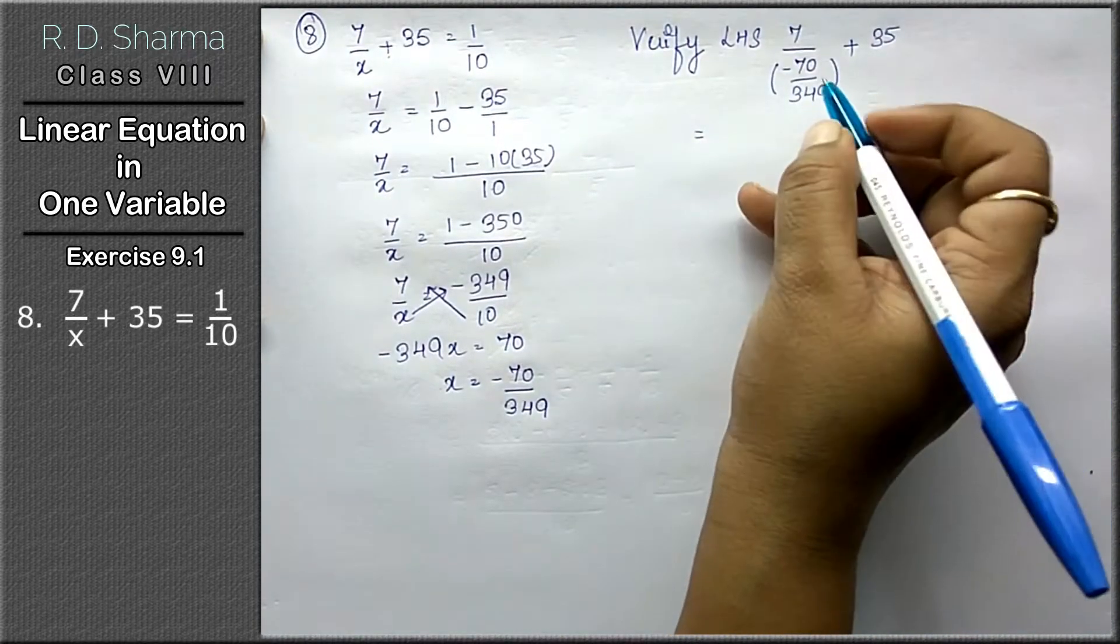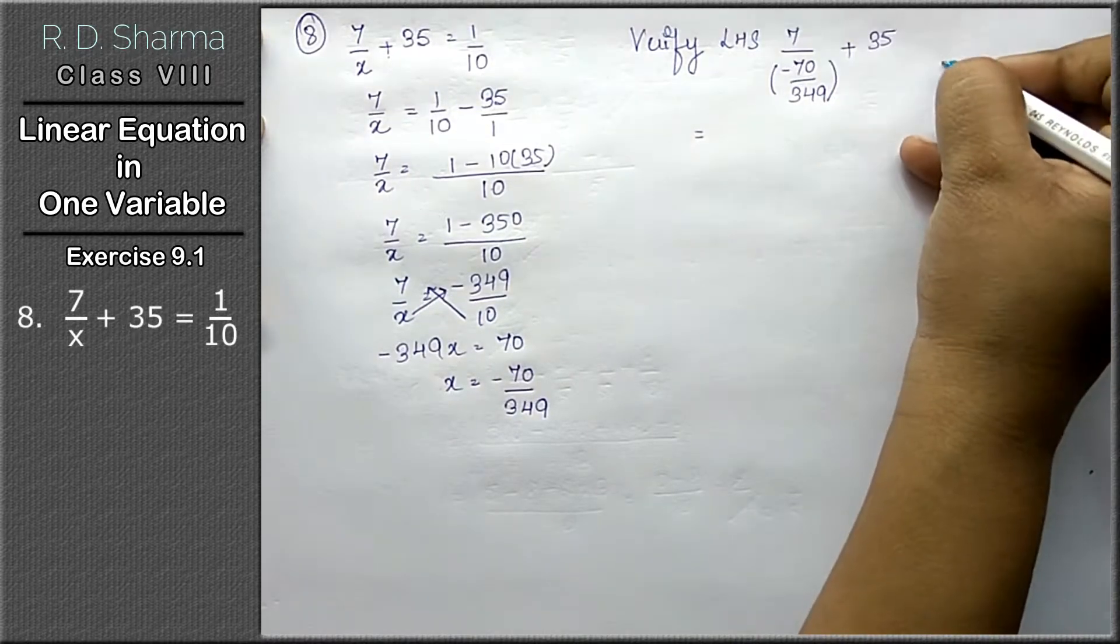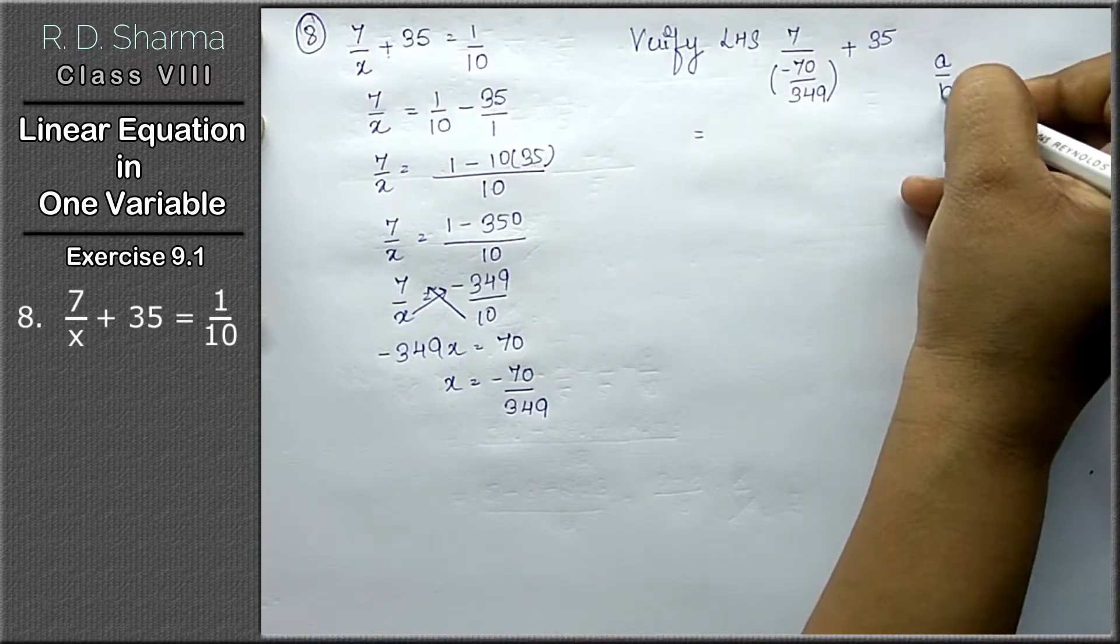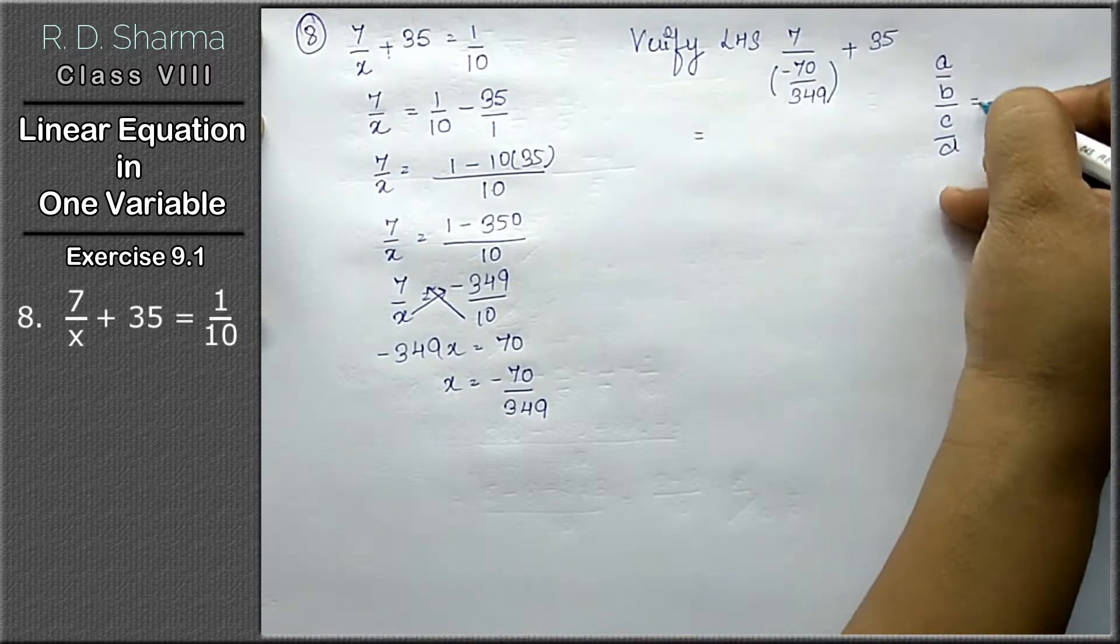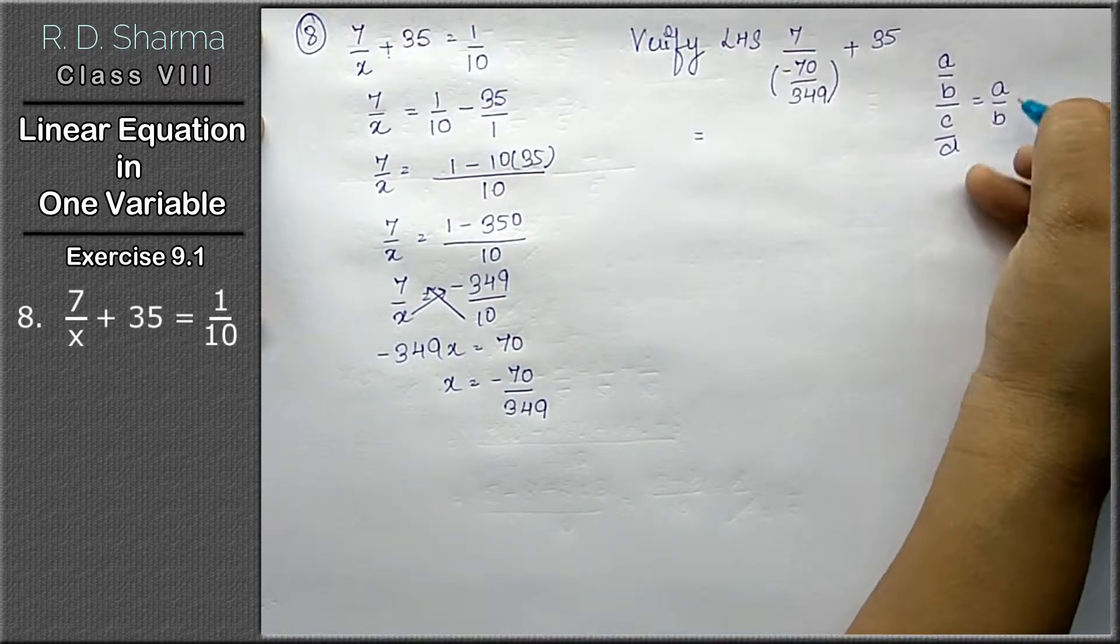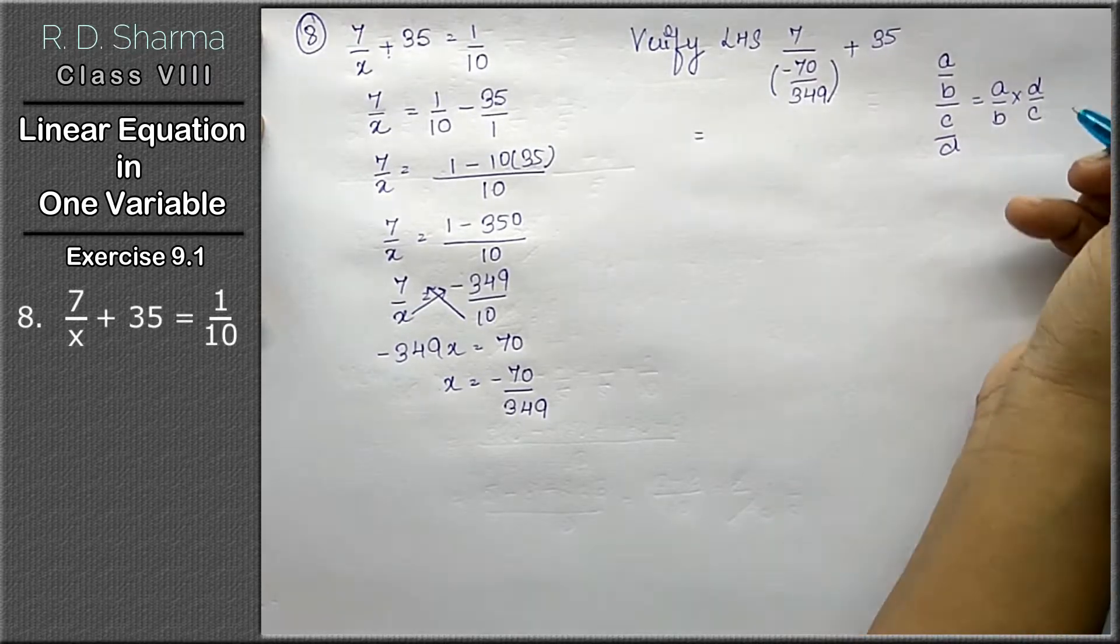Friends, agar is form mein hota hai, iska matlab hota hai, agar a upon b upon c upon d dete hain, to isko hum aise likhte hain: a upon b multiplied by d upon c hai.